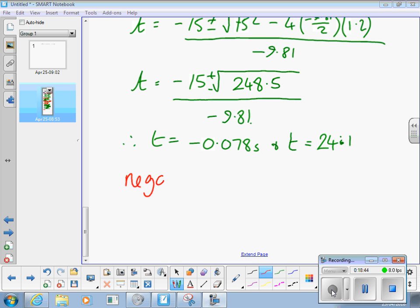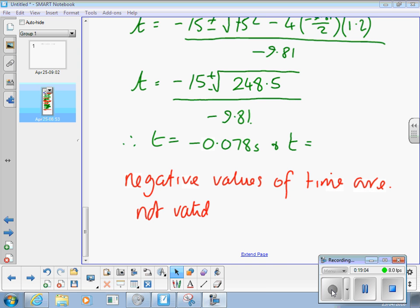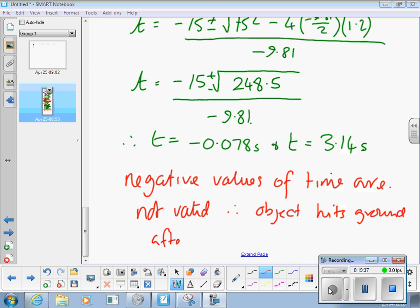T is equal to minus 0.078 and t is equal to 3.14 seconds to three significant figures. Now in this particular problem, any problem involving time, negative time is not generally useful to us, so we'd throw that solution away. Therefore, object hits ground after 3.14 seconds.